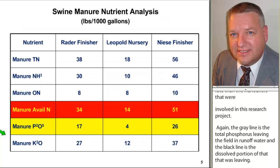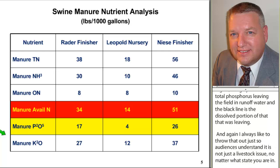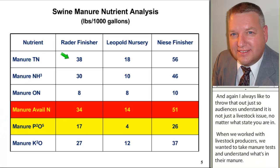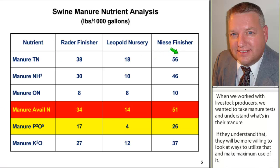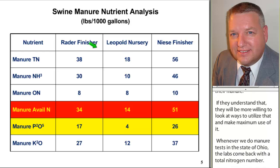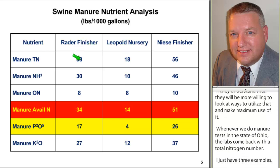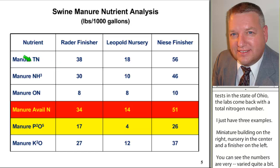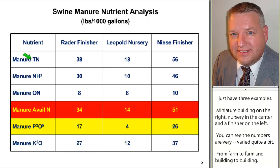When we work with livestock producers, we really want them to take manure tests and understand what's in their manure. If they understand that, they'll be more willing to look at ways to make maximum use of it. Whenever we do manure tests in Ohio, the labs come back with a total nitrogen number. I have three examples here: a finisher building on the right, a nursery in the center, and a finisher on the left. You can see the numbers vary quite a bit — manure nutrients do vary from farm to farm and building to building — but they will be very consistent from year to year out of the same facility.